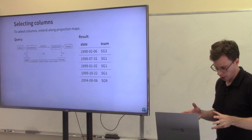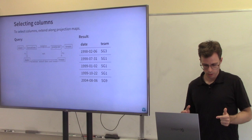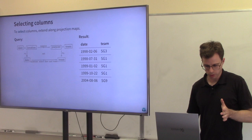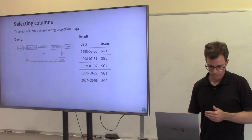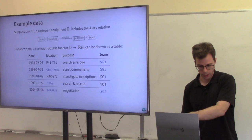The first operation is what in SQL is called a select — selecting some columns from a table. We have this extension operation: if I start with my relation on top and extend along the projections corresponding to the columns I want, that has the effect of selecting those columns. Here I'm taking the date column and the team column via those projections, discarding the other things, and getting a two-column table as the result.